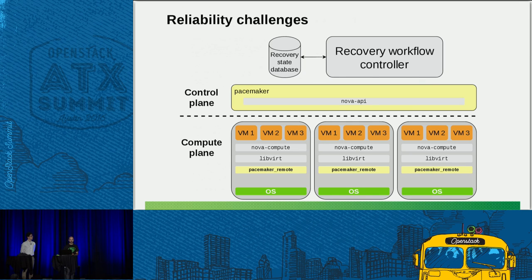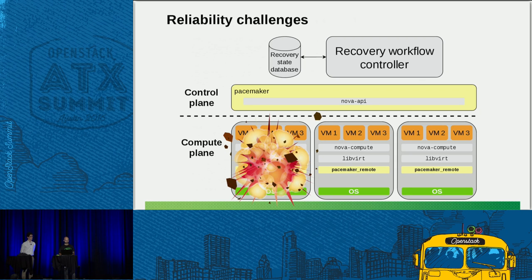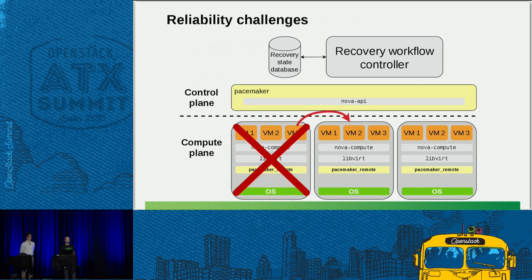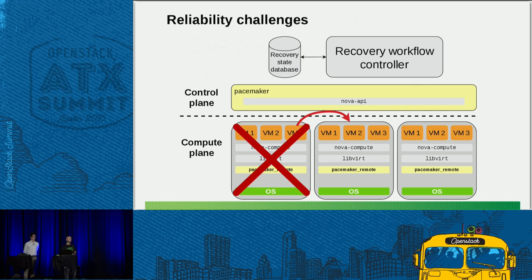The next and possibly biggest challenge is reliability, because you have to deal with lots of different failure modes. For example, if your hardware blows up, you need to fence the compute node — in other words, kill it forcibly through an out-of-band management solution like IPMI — to make sure the VMs are really dead before you resurrect them somewhere else. Then you resurrect them on a different compute node.